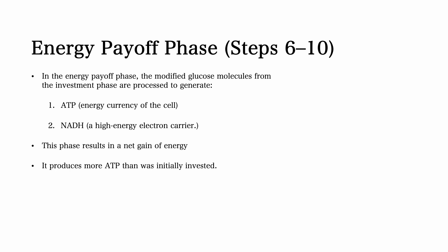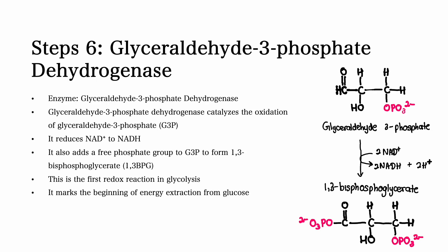Step number six. In step number six, the main enzyme is glyceraldehyde 3-phosphate dehydrogenase. In this step, glyceraldehyde 3-phosphate dehydrogenase catalyzes the oxidation of glyceraldehyde 3-phosphate, also known as G3P, while reducing NAD+ to NADH and adding a free phosphate group, forming 1,3-bisphosphoglycerate, also called 1,3-BPG. This is the first redox reaction in glycolysis and marks the beginning of energy extraction from glucose.